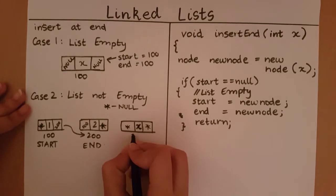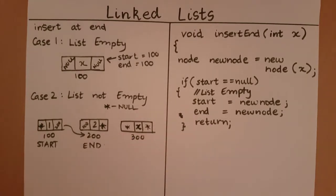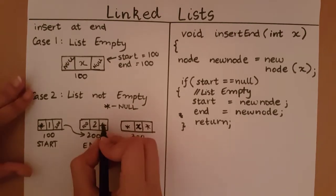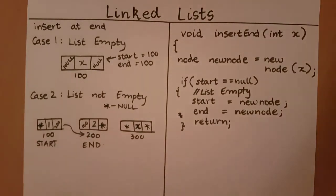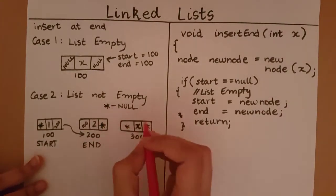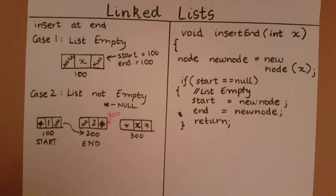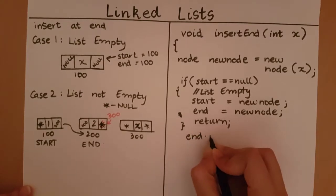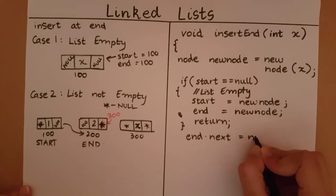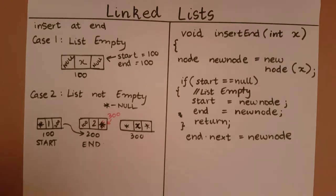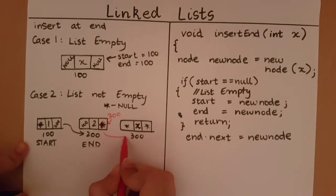The first thing I must do is, let's say this is at memory location 300. The first thing I must do is I must set the pre-existing end dot next to the address of the new node. So the first change I will make is to this, I will make this 300. I will store 300 in end dot next. So let me write the code for that. So end dot next is equal to new node. So when this becomes 300, automatically this is going to point to 300.